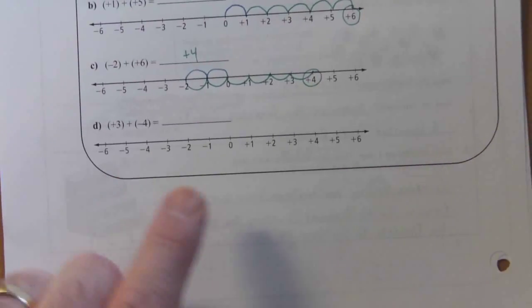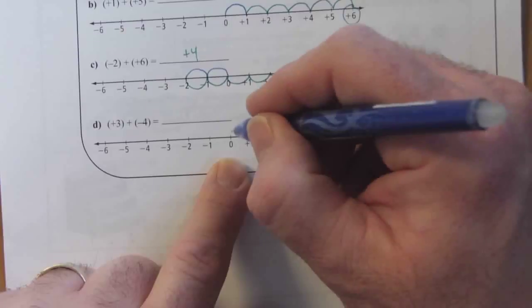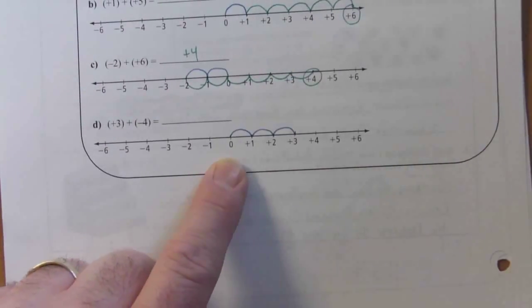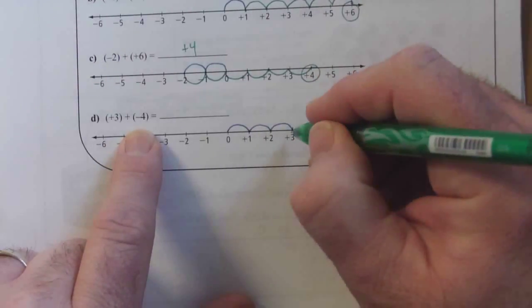Last one, start at zero. Positive, so I'm moving to the right. Three leaps. One, two, three. The next number is negative, so I'm going to the left this time.